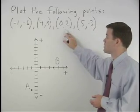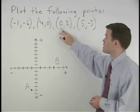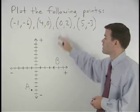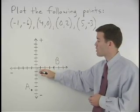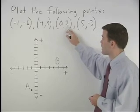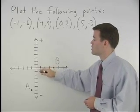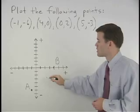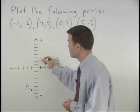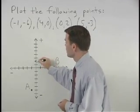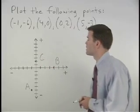For the point 0, 2: since the x coordinate is 0, we move 0 units to the left or right from the origin. And since the y coordinate is 2, we move 2 units up. So we go 0 to the left and right and 2 units up, and we can label that point C.